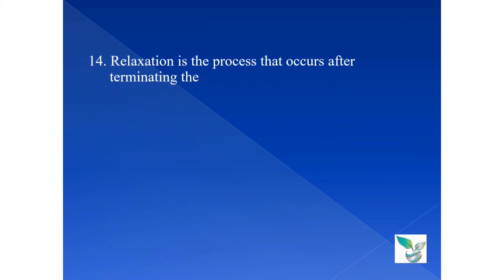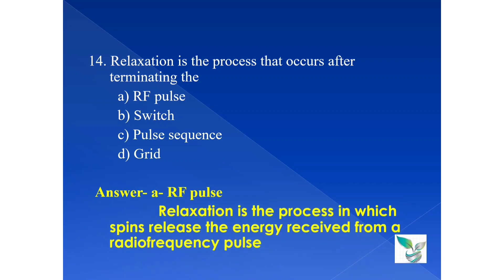Moving on to the next question, question number 14. Relaxation is a process that occurs after terminating the: option A RF pulse, that is radio frequency pulse, option B switch, option C pulse sequence, and option D is grid. The answer is option A radio frequency pulse. So relaxation is happening when the RF pulse is switched off. Relaxation is a process in which the spin releases the energy received from the radio frequency pulse. The energy released is known as the echo. This echo will be transferred into an MRI image.